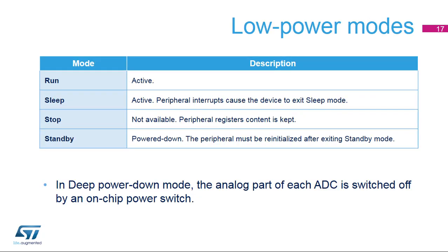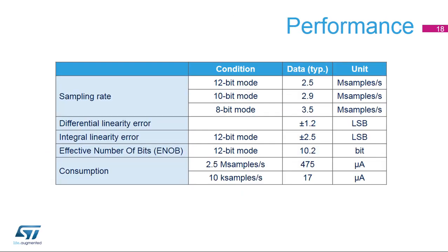The ADCs are active in run and sleep modes. In stop mode, the ADCs are not available but the contents of their registers are kept. In standby mode, the ADCs are powered down and must be re-initialised when returning to a higher power state. There is a deep power down mode in each ADC itself, which reduces leakage by turning off an on-chip power switch. This is the recommended mode whenever an ADC is not used.